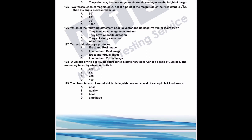Question 177: a terrestrial telescope produces what kind of image? A terrestrial telescope is a modified astronomical telescope with an erecting lens added in between. The erecting lens only makes the image erect without affecting magnification. The image is erect and virtual. The correct answer is C.